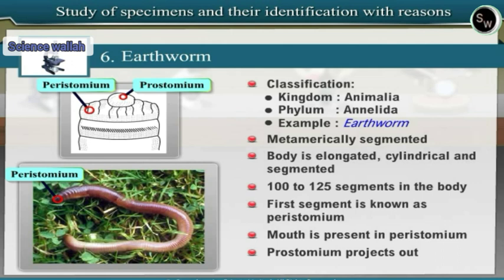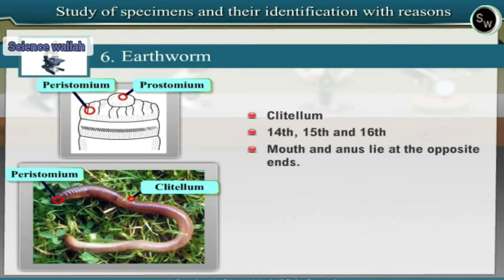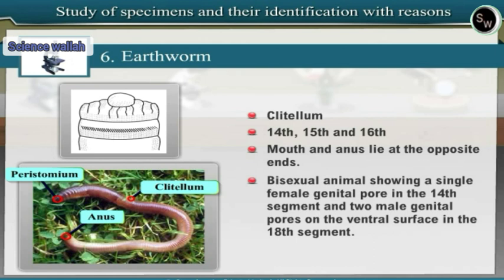A prominent brown-colored band called Clitellum is present in the anterior region of the body, covering segments 14th, 15th, and 16th. Mouth and anus lie at opposite ends. The earthworm is a bisexual animal showing a single female genital pore in the 14th segment and two male genital pores on the ventral surface in the 18th segment.